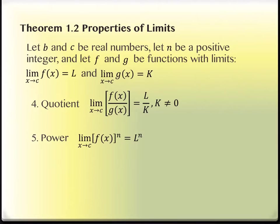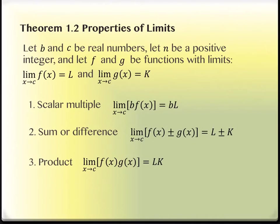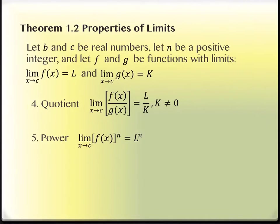I'd like to talk through why the power property works, which is also why property number three for the product works. If we have a product of two things, we just take the product of their limits. f of x to the nth power is f of x times f of x times f of x, however many n times — that's just a glorified product. So we take the product of the limits, which are all L, however many times we have f of x, and we'd have that to the nth power — so L to the n.